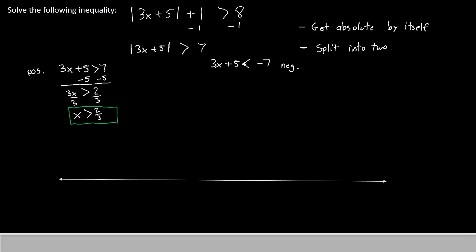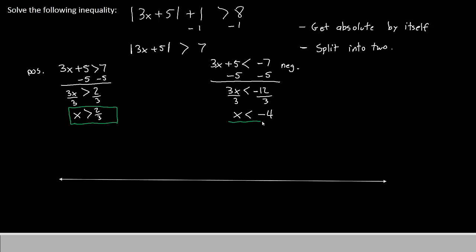Now we'll have a look at the negative version. Once again, we want to try to get x by itself. We first subtract 5 from both sides. This will give us 3x less than negative 7 minus 5, which is negative 12. Then we'll divide both sides by 3, which gives us x less than negative 4. That's our other solution.